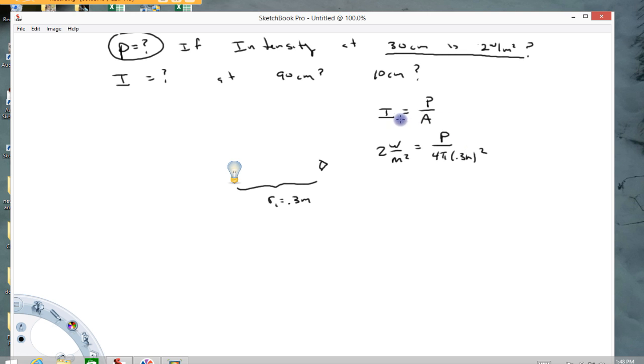And now we just need to solve this equation for P. So the power of this bulb is going to be equal to 2 watts per square meter times 4π times 0.3 meters squared. And I get a value of 2.26 watts.